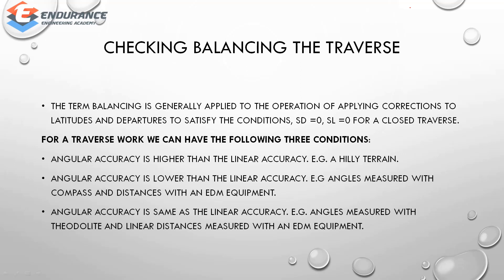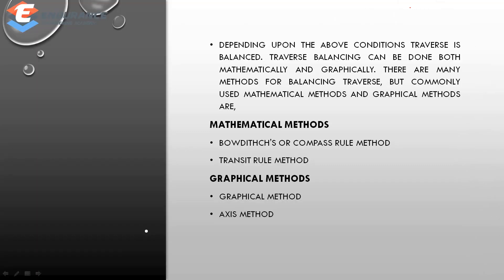Depending upon these conditions, the traverse is balanced accordingly. Traverse balancing can be done both mathematically and graphically. There are many methods for balancing a traverse, but the commonly used ones are mathematical methods, graphical methods, and other methods.